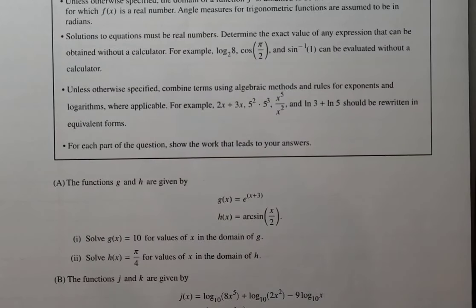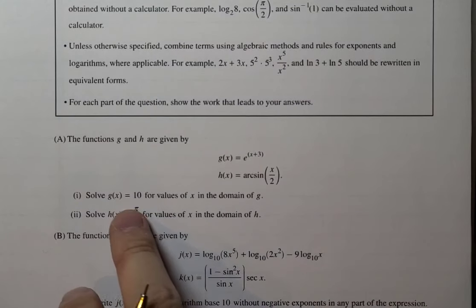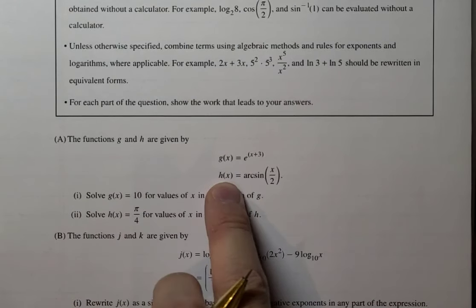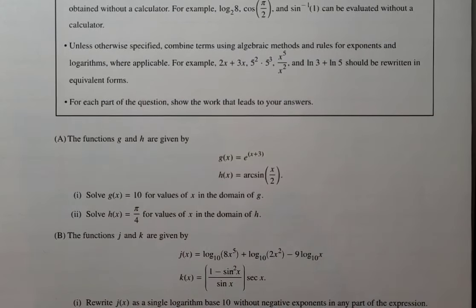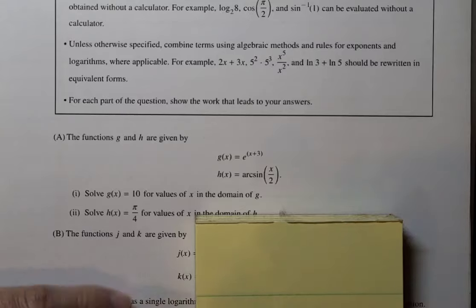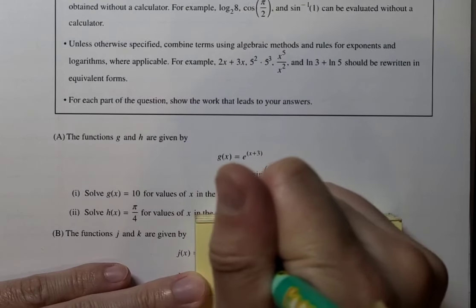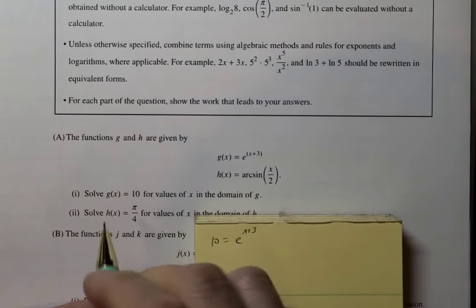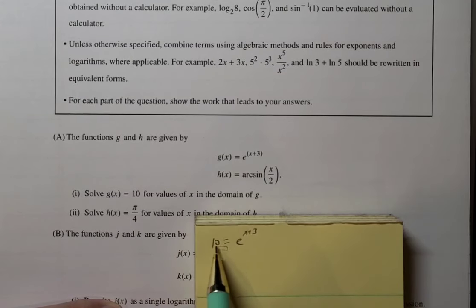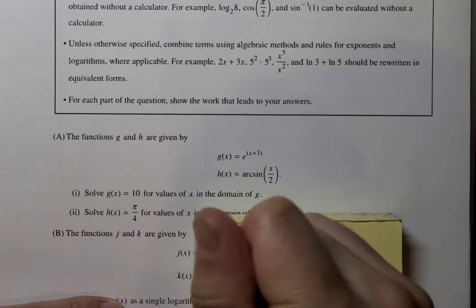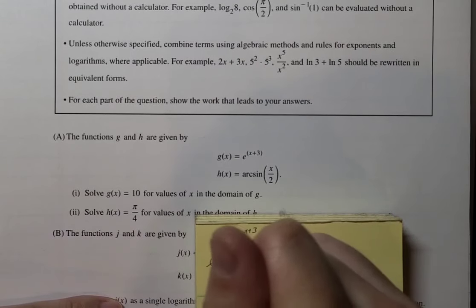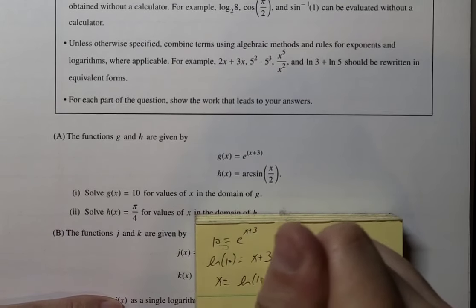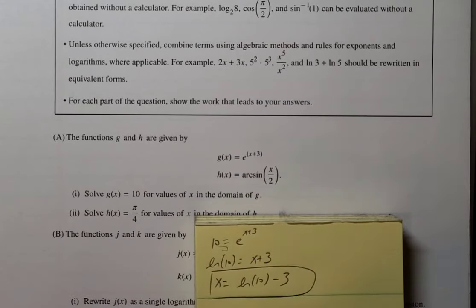Anyway, so this is the algebra question. Lots of algebra to be careful about. So first one says g is here, h is here. Solve g of x equals 10 for values of x in the domain of g. This is the easier one of the two in this part. So we want 10 to be equal to e to the x plus 3. That's g of x, which is this, equals 10. So we just take the natural log on both sides. So ln of 10 equals x plus 3. So x is ln of 10 minus 3. That's your answer. Simple part one.